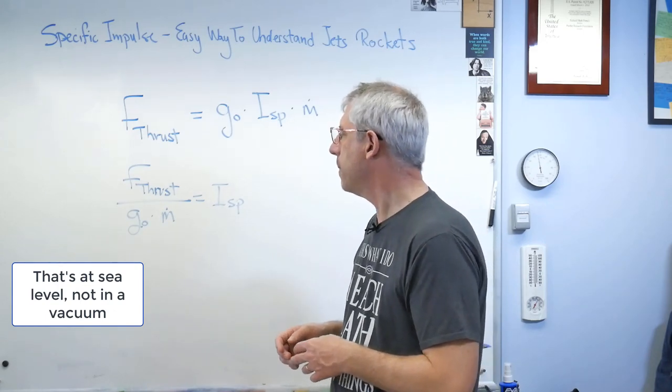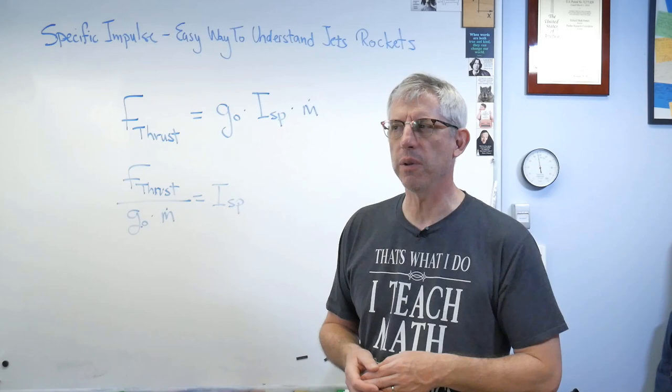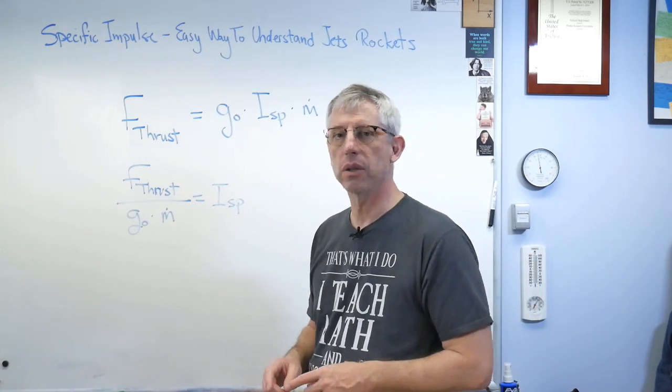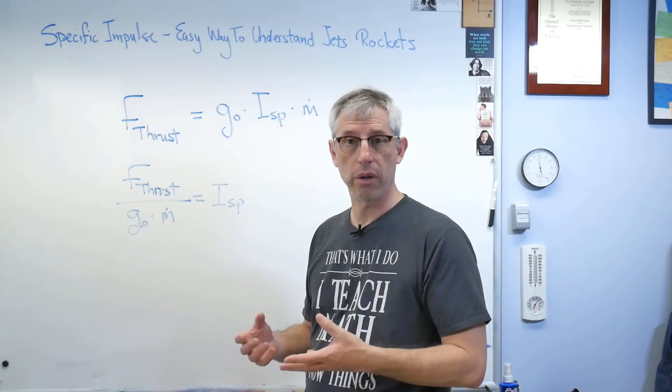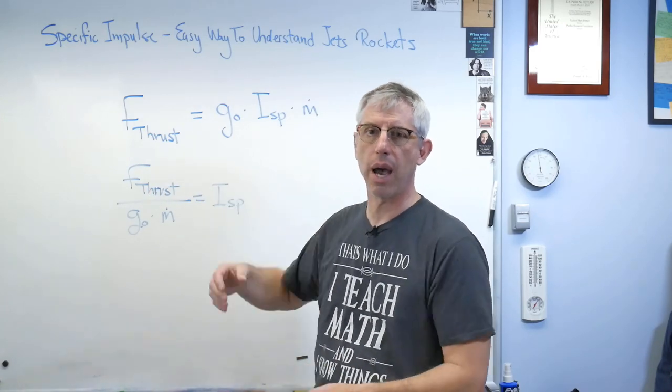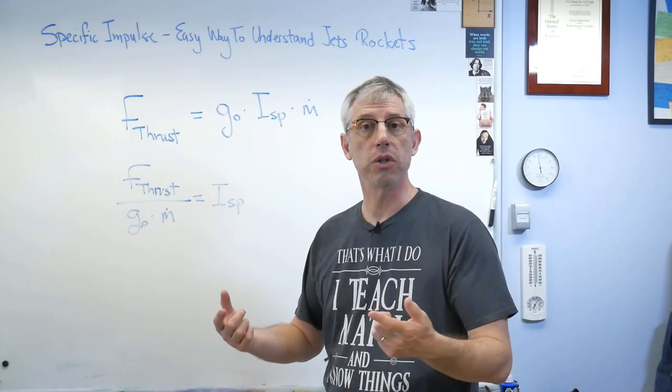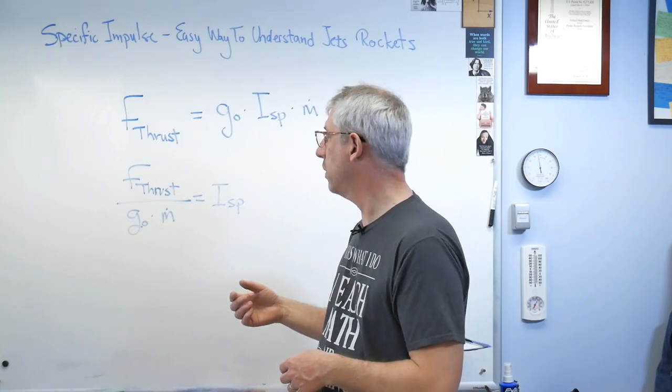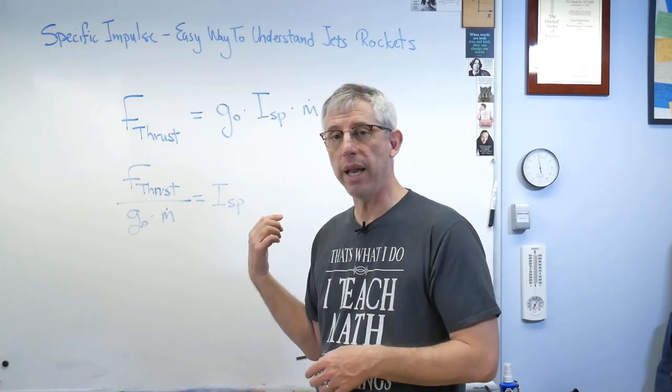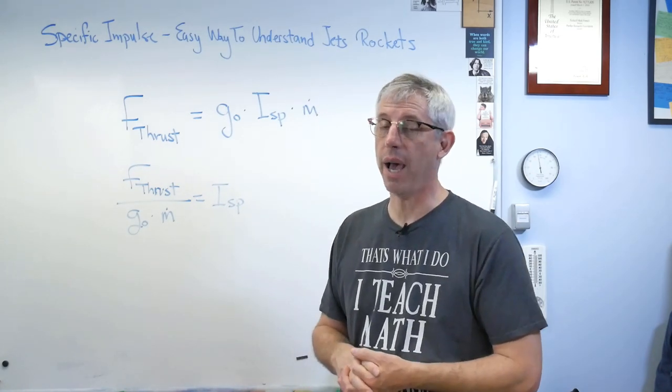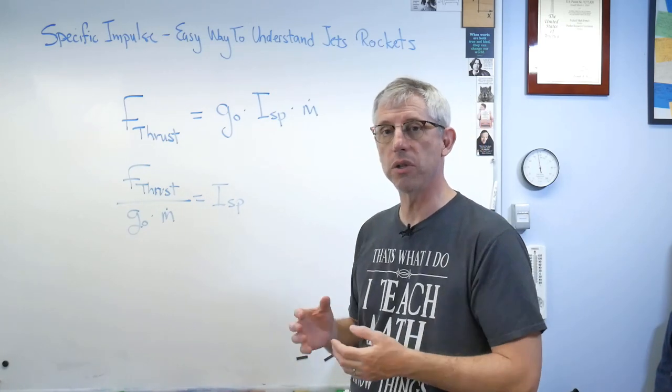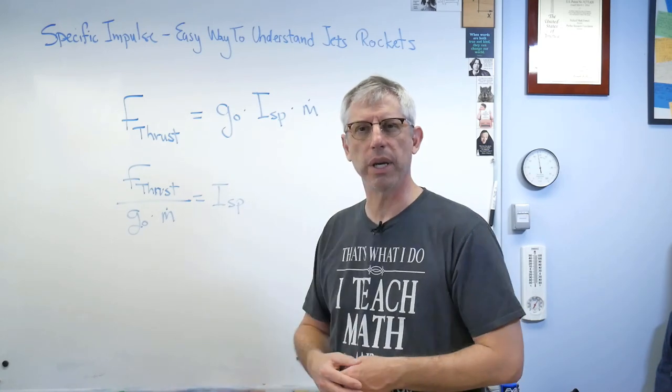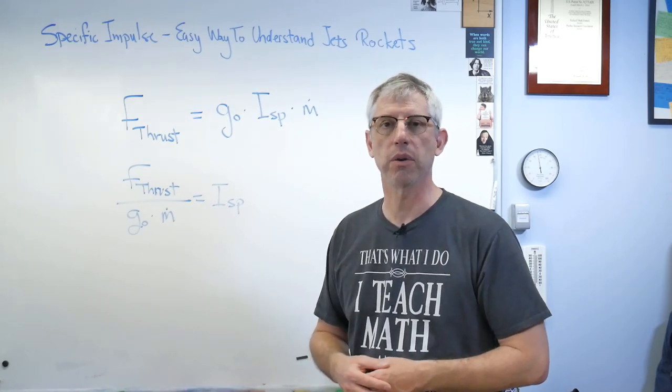I need some numbers here. I don't have any sense of context for this. We're going to get away from the board here in a second and I'll show you some examples. But if you want a range, rockets are in the neighborhood of a few hundred. The most efficient liquid fuel rocket I know of is one that burns liquid hydrogen and liquid oxygen, and you get a specific impulse in the neighborhood of 300 or 350 seconds.